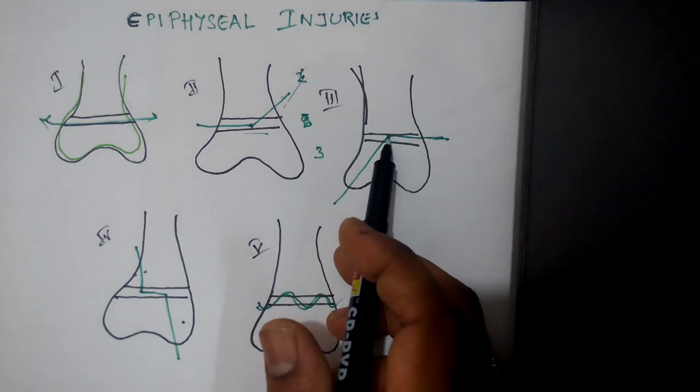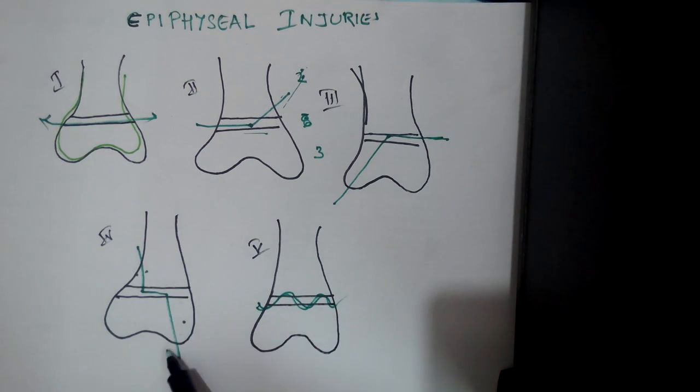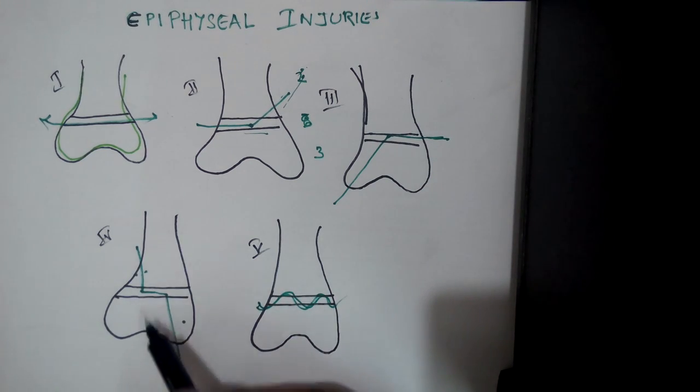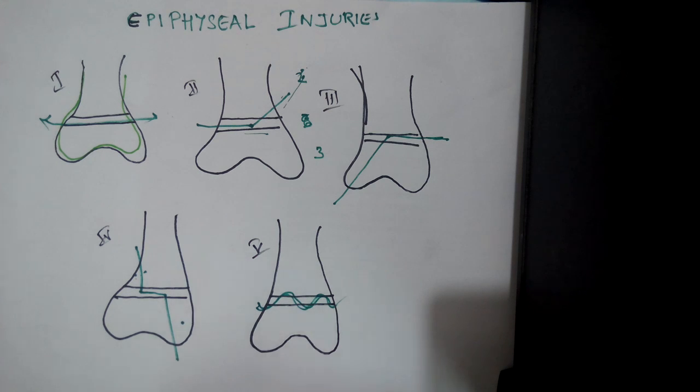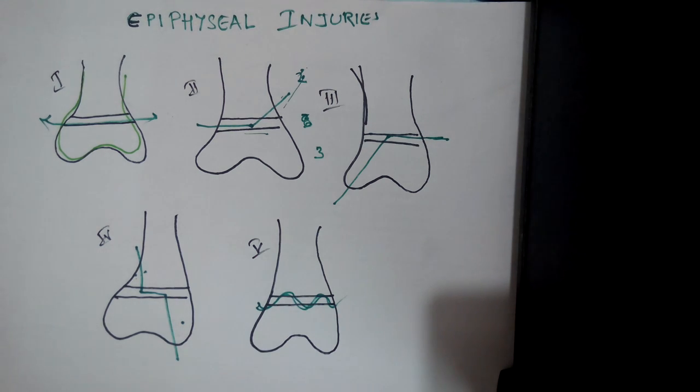After traveling a distance in the physis, number 4: just draw a number 4 over the physis with the horizontal blade on the physis. Now you get a metaphyseal as well as epiphyseal beak. And 5 is a crush. Hope this tutorial is quite useful and you will remember this for quite long.